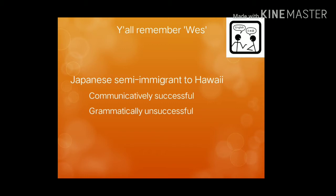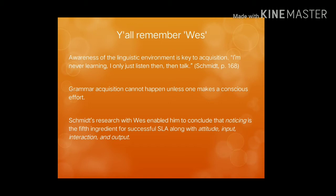Who is Wes? Wes is a Japanese semi-immigrant who moved from Japan to Hawaii. He was a young Japanese artist who learned English without instruction in Honolulu. His progress over the first three years of intermittent but increasingly prolonged residence in the second language environment was chronicled by Richard Schmidt. As a result, he was communicatively successful but grammatically unsuccessful.